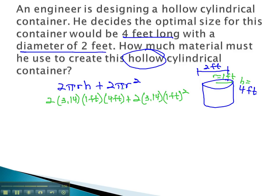And again, we use order of operations, doing the exponent first, everything else staying the same. 2 times 3.14 times 1 foot times 4 feet plus 2 times 3.14, finally got to the exponent, 1 squared is 1 square foot.